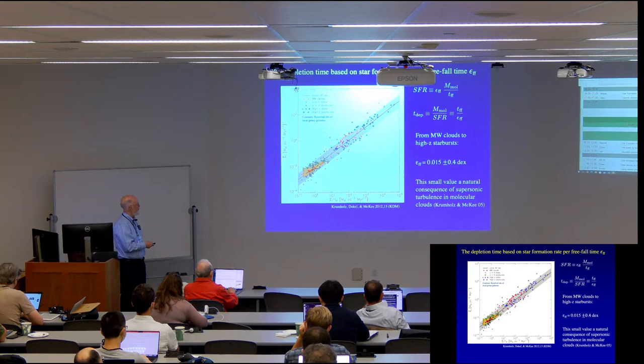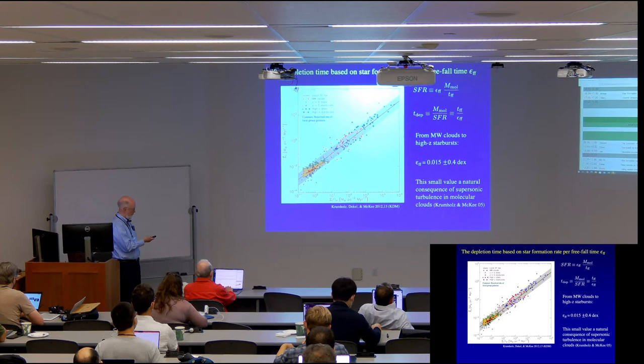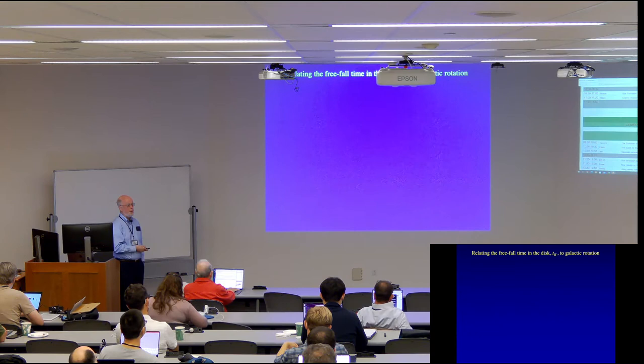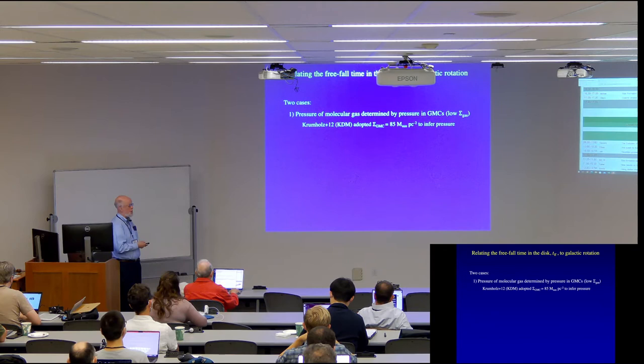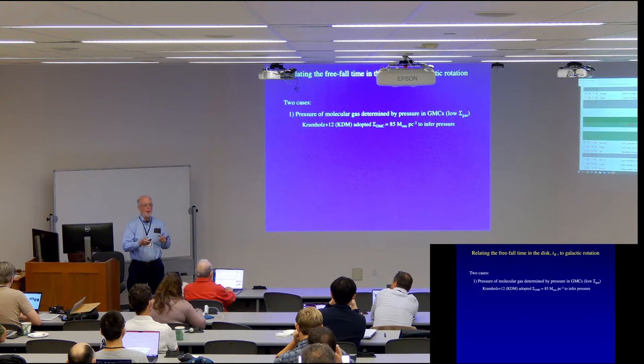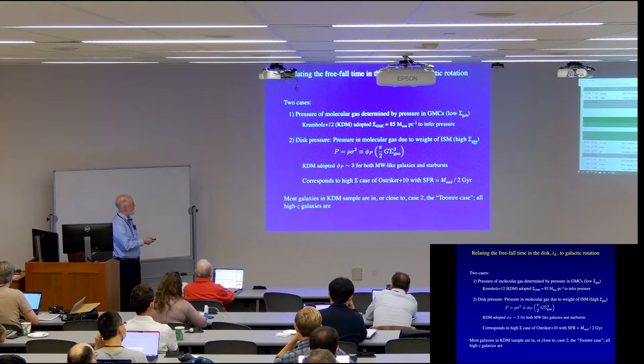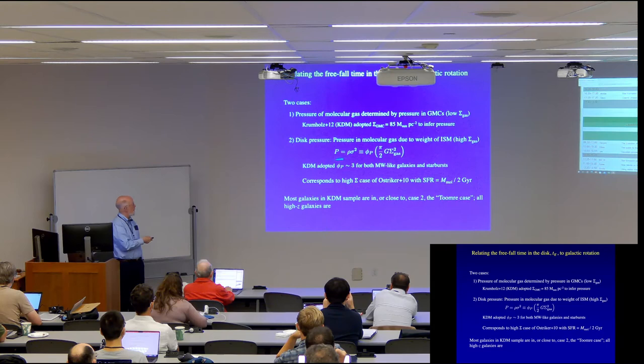And what we showed a number of years ago was that this is a natural consequence of the universal process of supersonic turbulence in molecular clouds. Okay. So now let's relate the freefall time in the galactic disk to galactic rotation. And there are two cases. If you have a case like, true throughout most of the Milky Way, we have giant molecular clouds. And the star formation occurs within these molecular clouds and you really have to understand the properties of the individual molecular clouds to get the star formation rate.